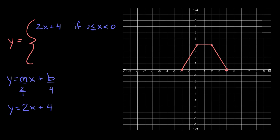Now let's quickly find these other two lines. Next let's find this one. I'm going to tell you that this side has a closed circle and this side has an open circle. And as you can see, it's just a straight horizontal line.